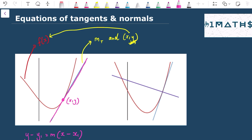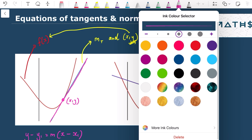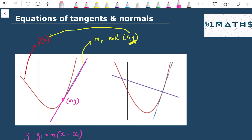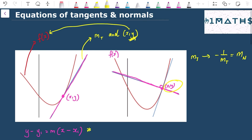The second diagram shows the tangent as a dotted line, and then a line perpendicular to the curve f(x) at the point (x, y) — that is the normal to the curve. To find the equation of the normal, I first find the gradient of the tangent and then take the negative reciprocal, which gives the gradient of the normal, denoted m_n. I then use the same formula with the given point.